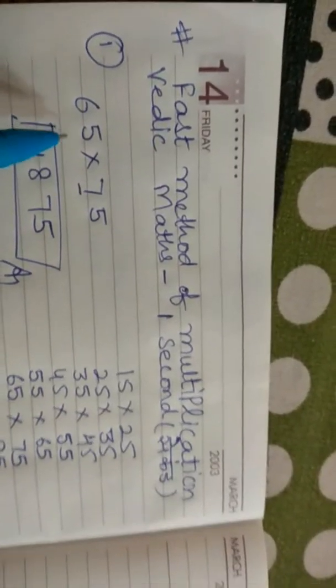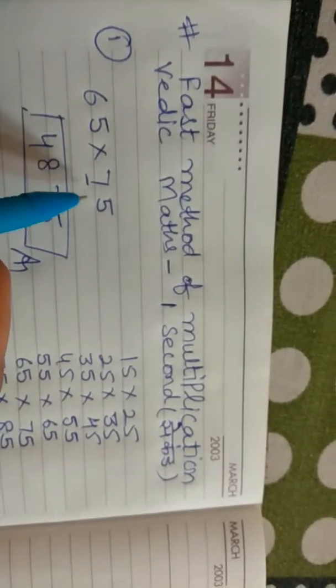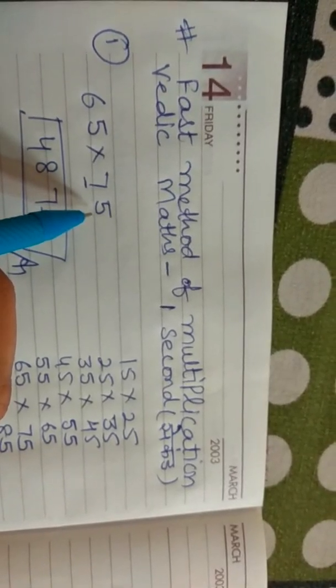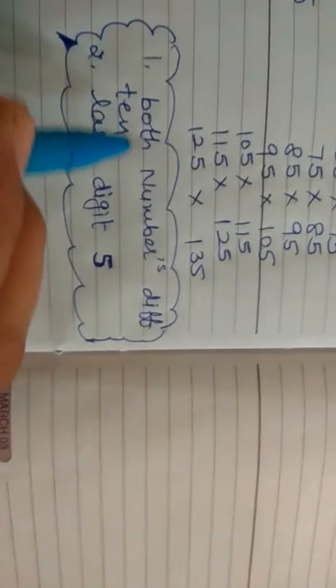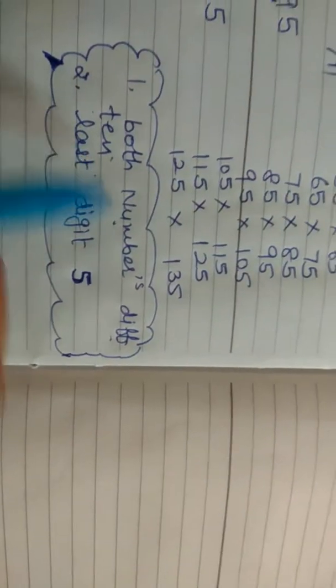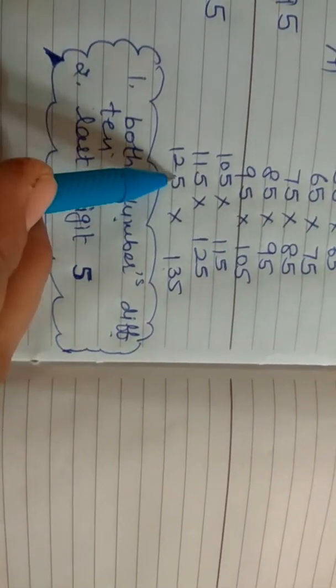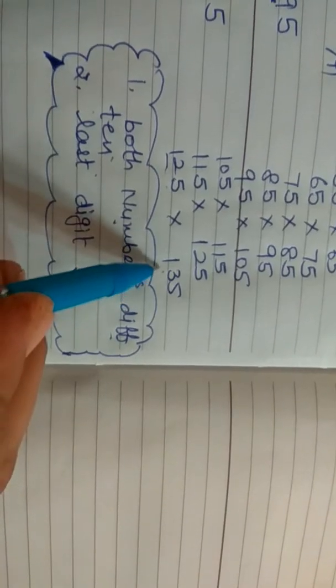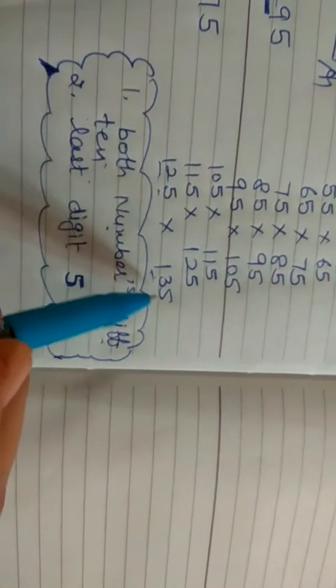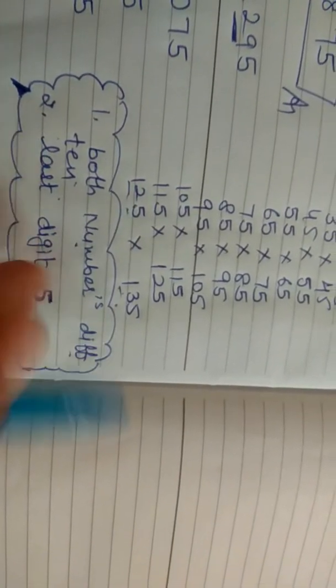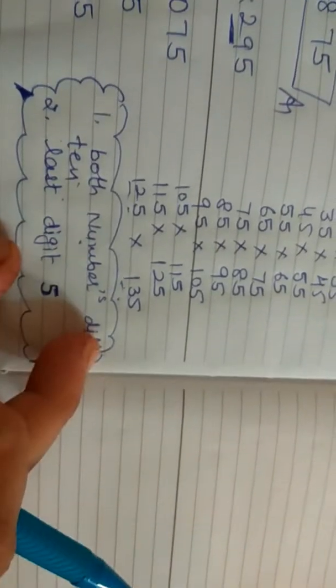Questions are like this: 65 multiply by 75. What we need to know is that both numbers difference is 10, and both last digits should be 5.